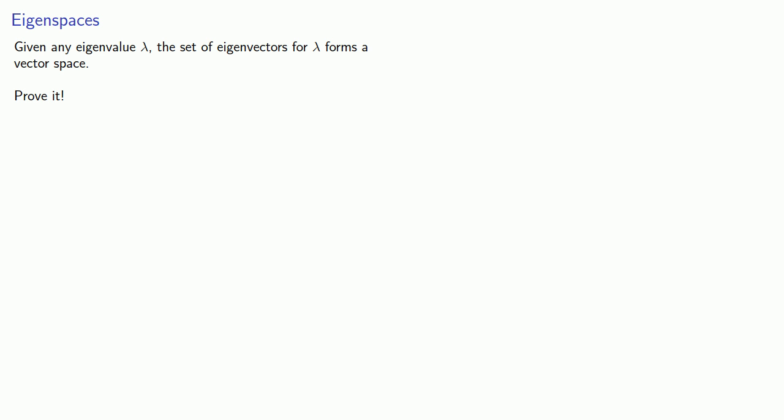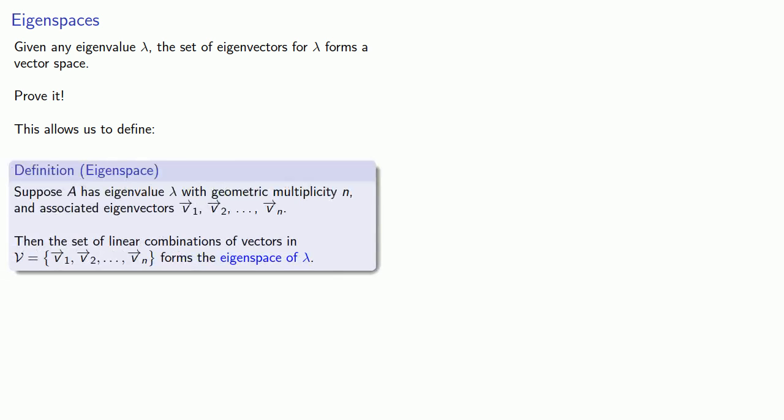We close with the following idea. Given any eigenvalue lambda, the set of eigenvectors for lambda forms a vector space — something you should prove. This allows us to define an eigenspace. Suppose A has eigenvalue lambda with geometric multiplicity n and associated eigenvectors v1, v2, and so on. Then the set of linear combinations of those eigenvectors forms the eigenspace of lambda.